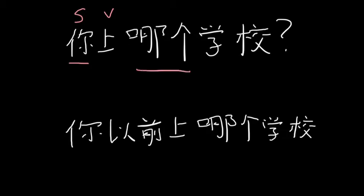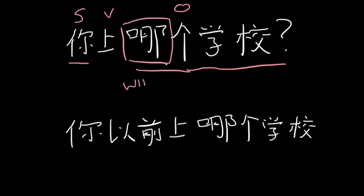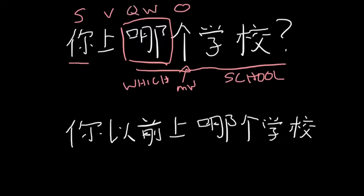'Nage' is your object phrase. So in the STPVO format you have 'ni shang nage xue xiao.' Your question word is 'which' right here. In Chinese you need a measure word when you're talking about something specific, so that's why you use the default 'ge.' 'Nage' — that is your measure word — and then 'xue xiao' is school. So 'ni shang nage xue xiao,' where 'which' is your question word.